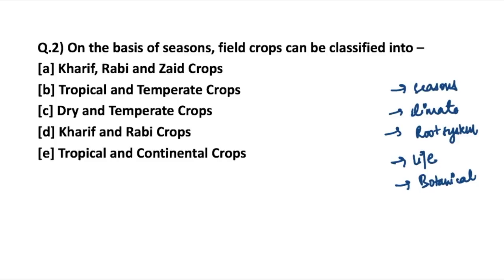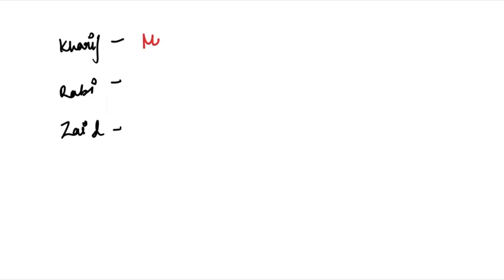On the basis of seasons, field crops can be classified into Kharif, Rabi, and Zaid crops. Similarly, on the basis of climate, crops can be divided into tropical and temperate crops. Kharif crops are more popularly known as monsoon crops, as they are grown during the monsoon season. Rabi crops are winter crops, grown during the winter season. Zaid crops cover the short duration between Kharif and Rabi, categorized as summer crops.